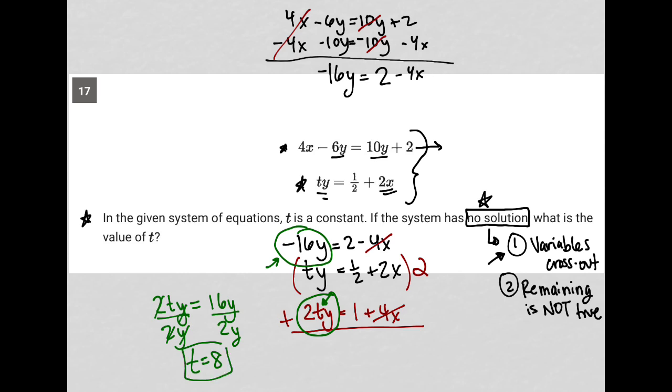So if t were 8, that would make this bottom thing that I have circled here, this term, it would make that equal to positive 16y, which would then allow these two things to cross out. Now, what's left over? I'd have 0 then on the left-hand side of my equation, and I'd still have 2 plus 1, which is 3. And that is the second part of this, which is the remaining is not true. 0 does not, in fact, equal 3.